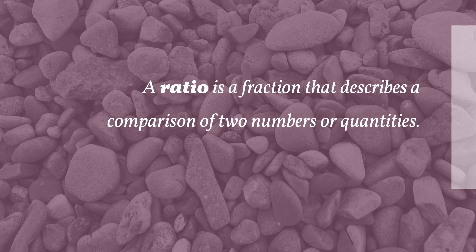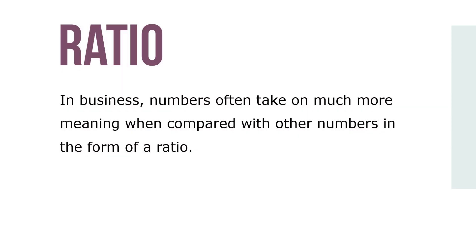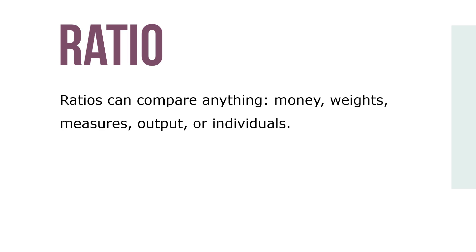A ratio is a fraction that describes a comparison of two numbers or quantities. In business, numbers often take on much more meaning when they are compared with other numbers in the form of a ratio. Ratios can compare anything: money, weights, measures, output, or individuals. The units don't have to be the same. If we can buy nine ounces of shampoo for $2, this is actually a ratio of ounces to dollars, or nine to two.